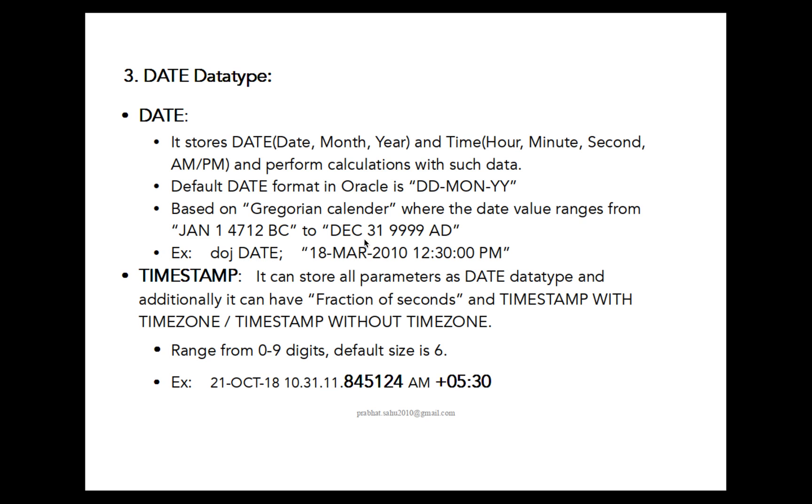I have given one example below that date of joining is a DATE type. I can store this type of data: 18-MAR-2010 12:30:00 PM. It means 18th March 2010, 12 hour, 30 minutes, 00 seconds, and the meridian indicator will be PM.